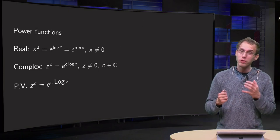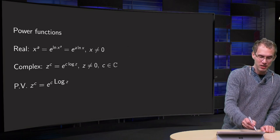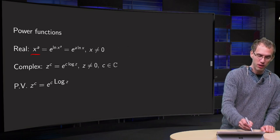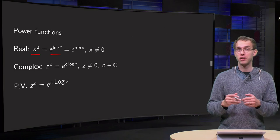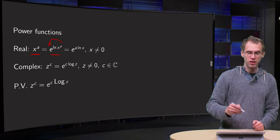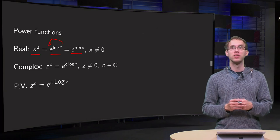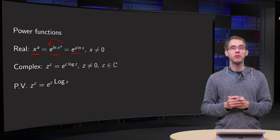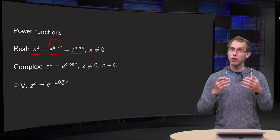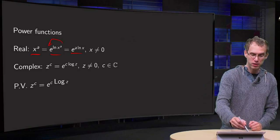So what do we know about real functions? In the real case, x to the power a equals e to the power ln x to the power a, and you can take the a in front, so you get e to the power a times ln of x. So in the real case, you can define all those powers in terms of logarithm, as soon as you know the exponential function.